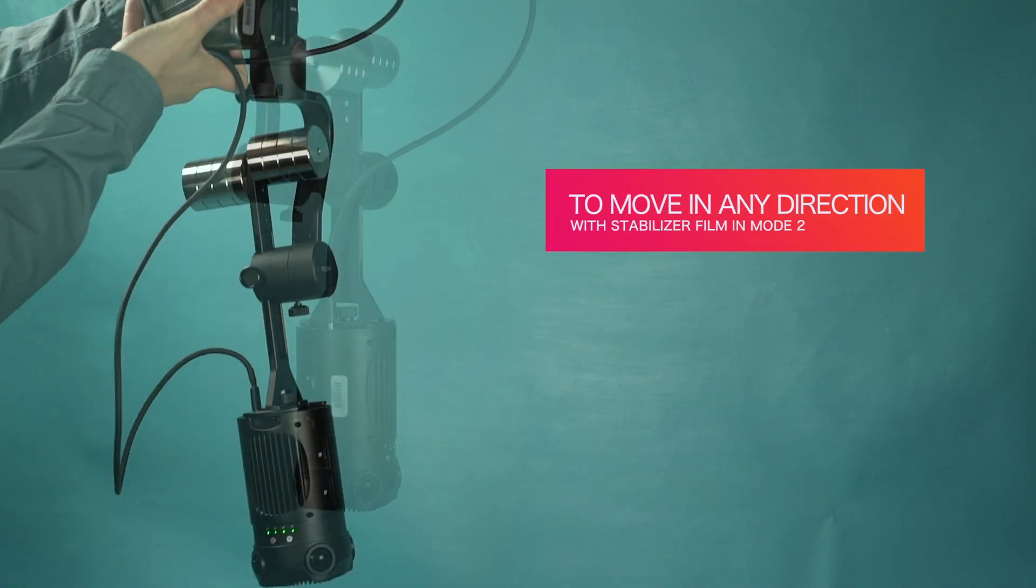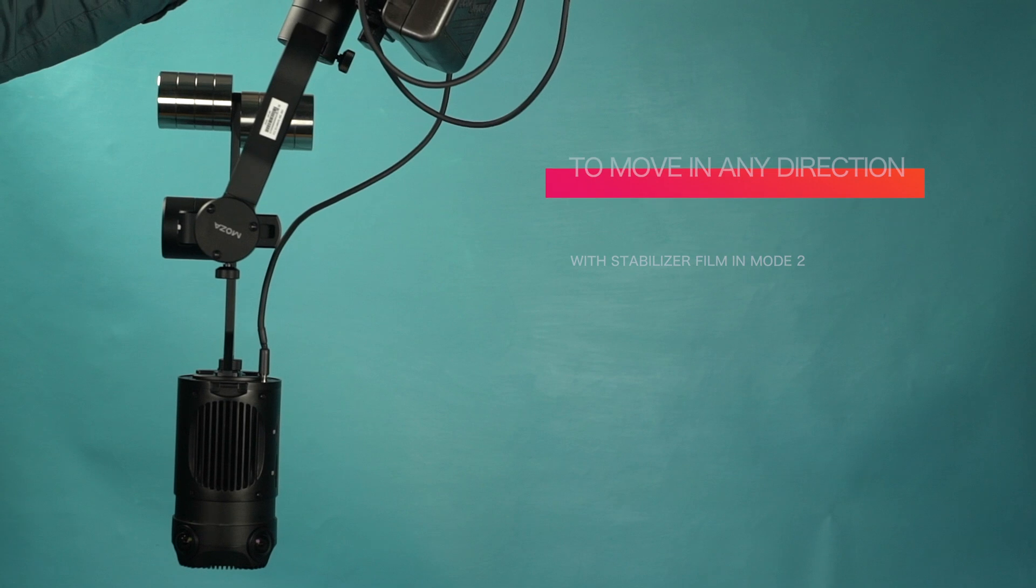To freely move the stabilizer in almost any direction, try filming in mode 2.